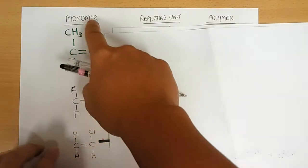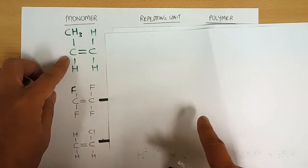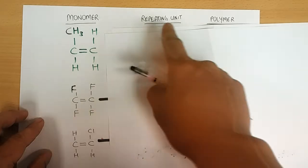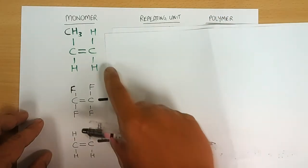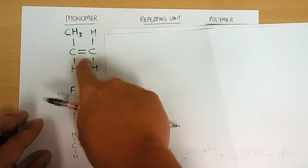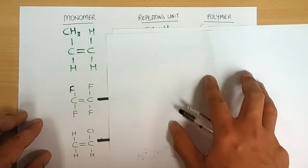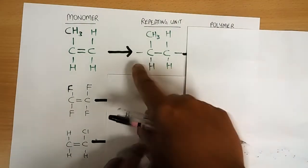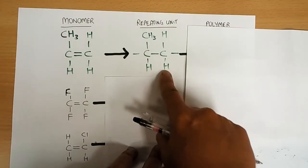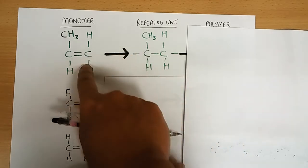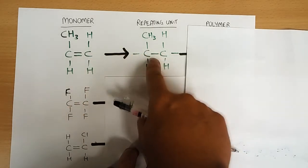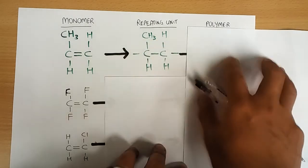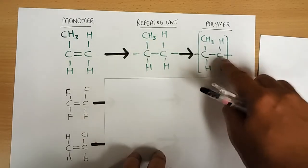A monomer unit is usually an unsaturated compound. For example, there are three different sorts shown here, and each of them will give you a different polymer. So what happens if you have thousands of these in one container? You will get a repeating unit consisting of almost the same structure, but the double bond has opened up. Please don't write a double bond when you are drawing a repeating unit — it extends itself many times to form the polymer.